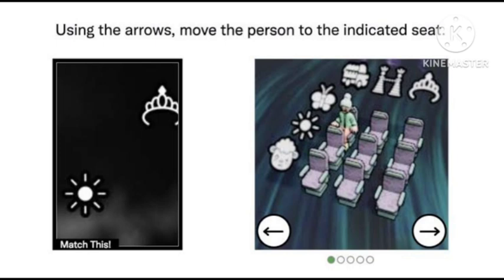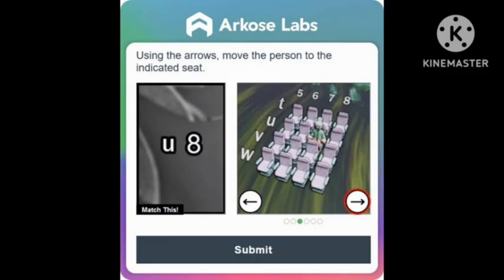So what you need to do to fix the problem: on the left side an image is shown in which you can see a character shown at a specific position. In this image you can see that U8 is shown. In the U8, what you need to do is put the person sitting on the chair to the position mentioned in the left side of the image.